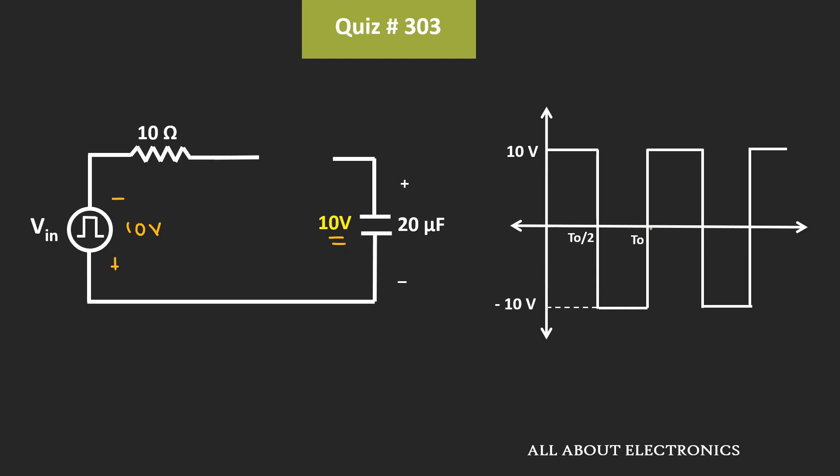Once again, during this positive half cycle, this diode will conduct, and the voltage across the capacitor will remain 10V. So after the T divided by 2 time period, the voltage across the capacitor will remain 10V.